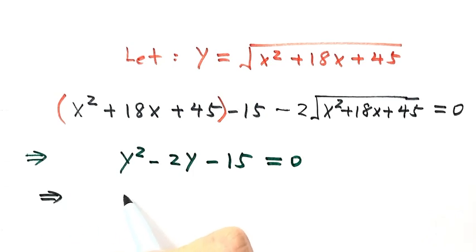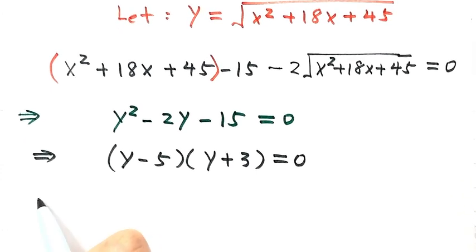Then y minus 5 times y plus 3 equals 0. So y equals 5 or y equals negative 3.